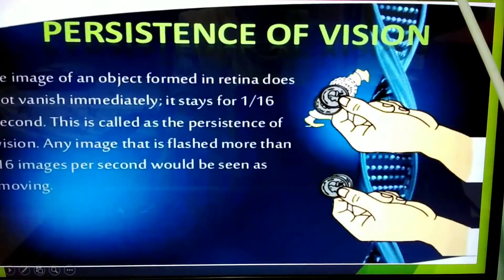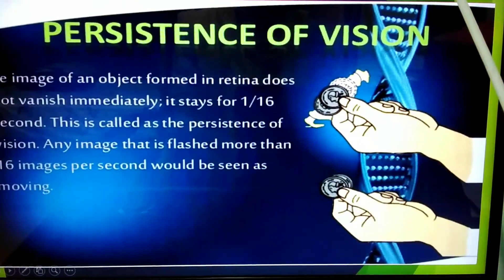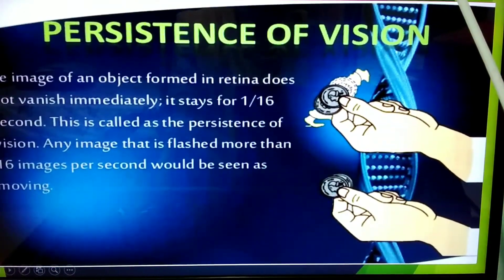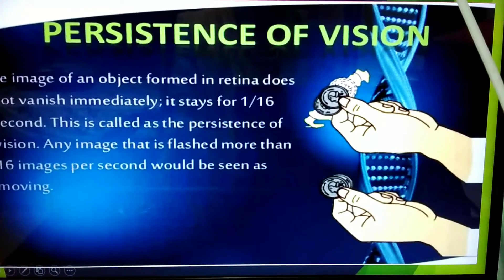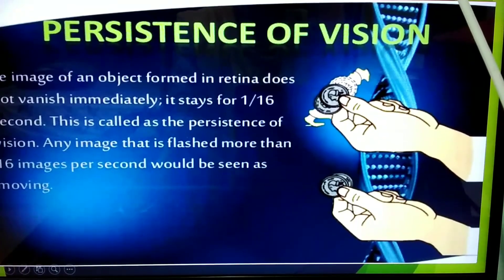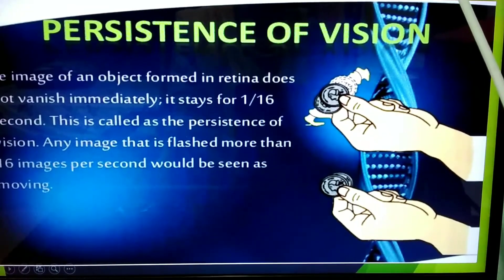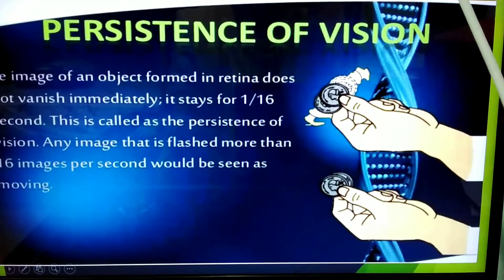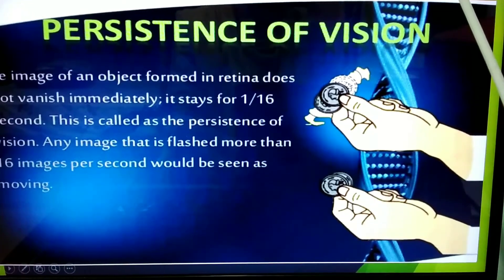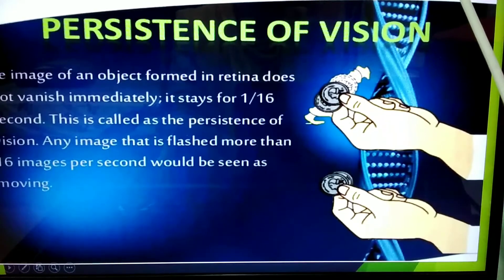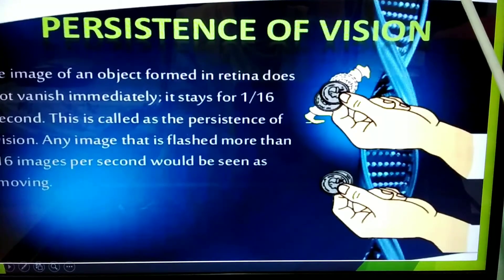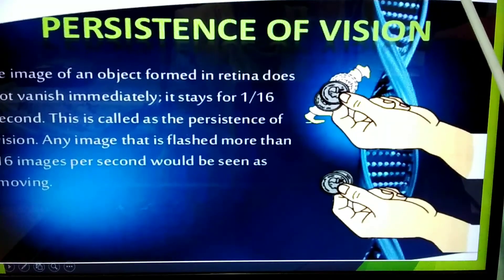Persistence of vision: the image of an object formed on the retina does not vanish immediately — it stays for 1/16th of a second. This is called persistence of vision. Any image that is flashed more than 16 images per second would be seen as moving.